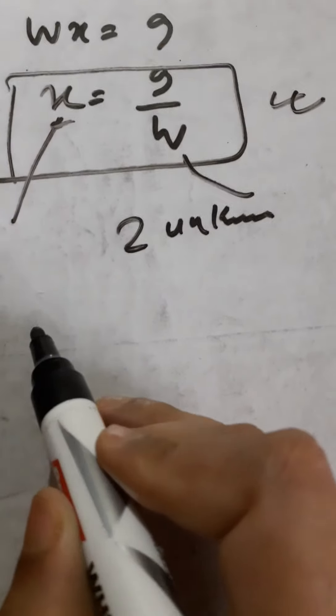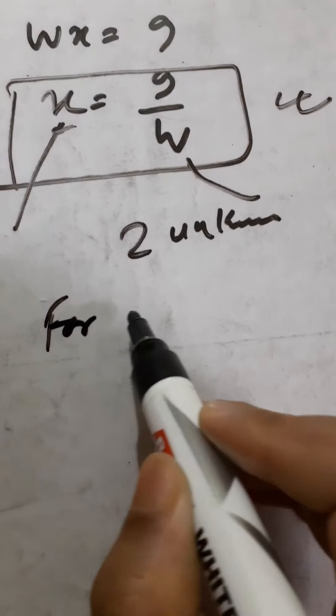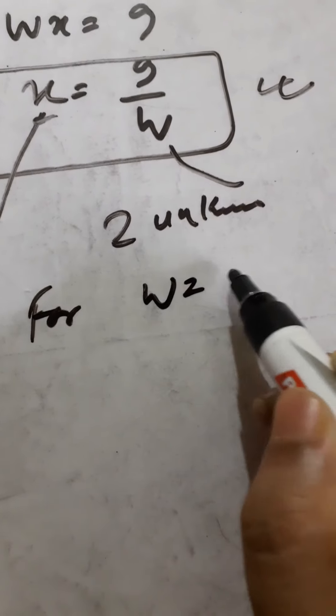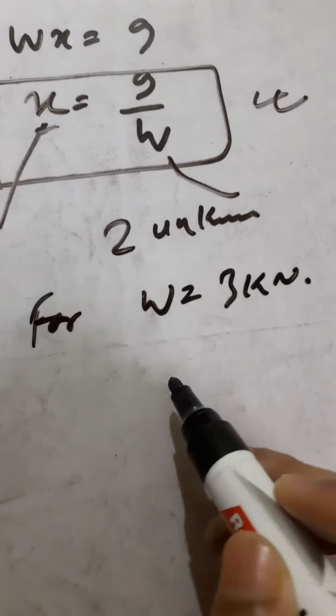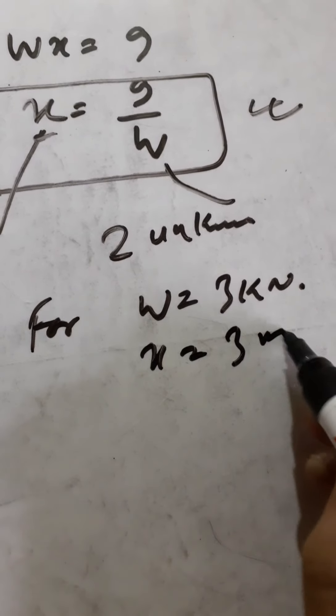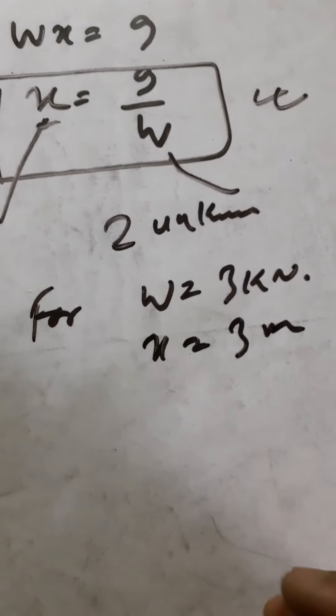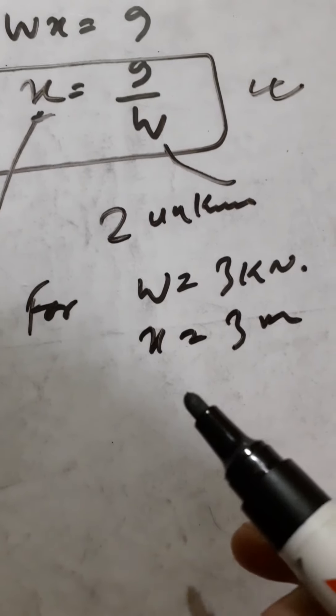If we check the data, for W equal to 3 kilonewtons, we get x equal to 3 meters. This will be the same as the problem we have discussed earlier.